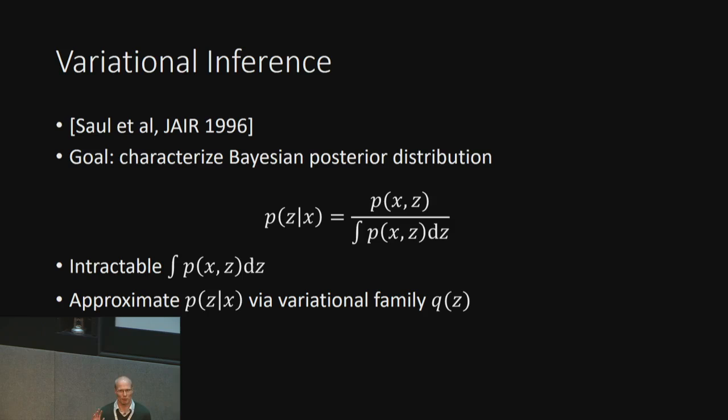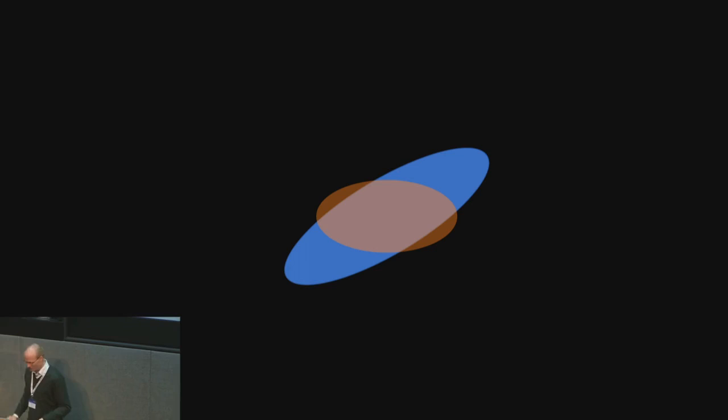If you have not heard of variational inference, here's one slide that roughly shows what it does. You have an intractable distribution, but you have a tractable family — for example, an isotropic normal distribution. You iteratively adjust the parameters to make it closer, and once you're close enough, you stop and say this is my proxy, this is my result. That's a very cartoonish summary of variational inference.